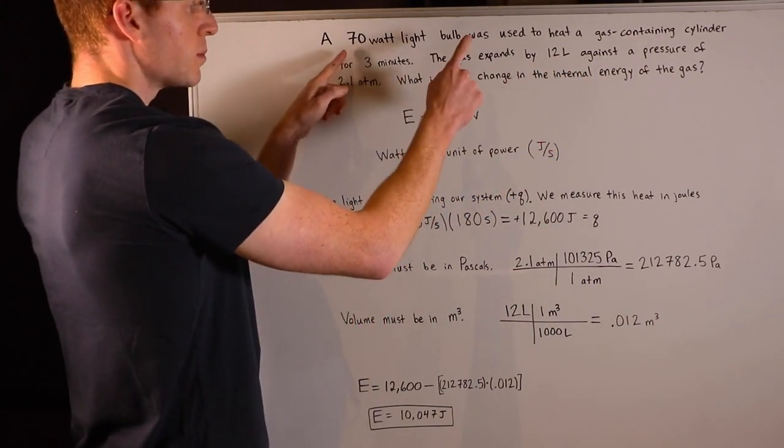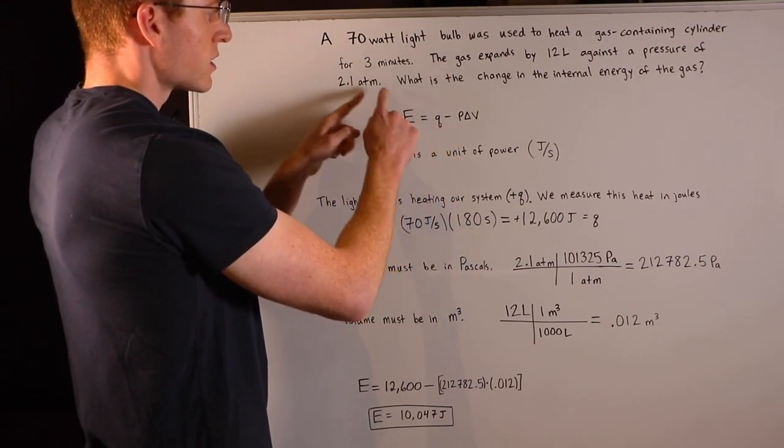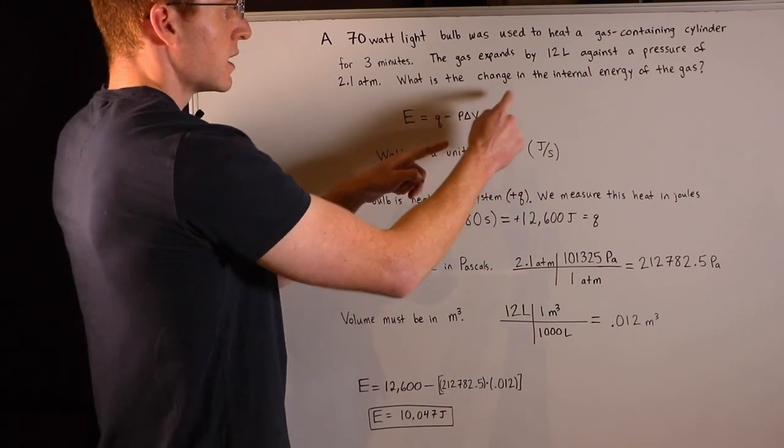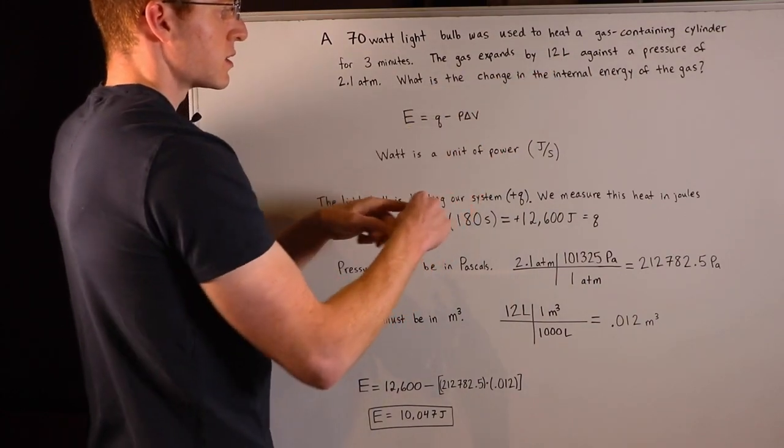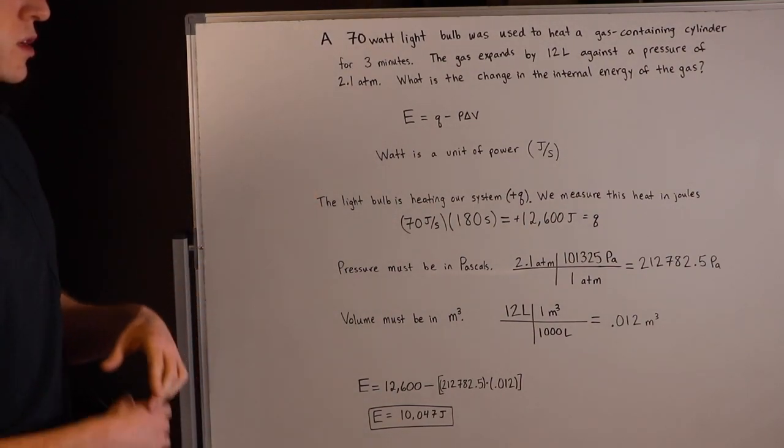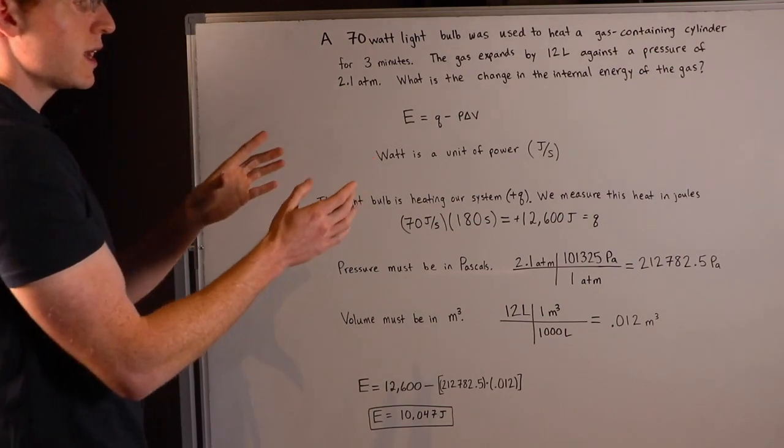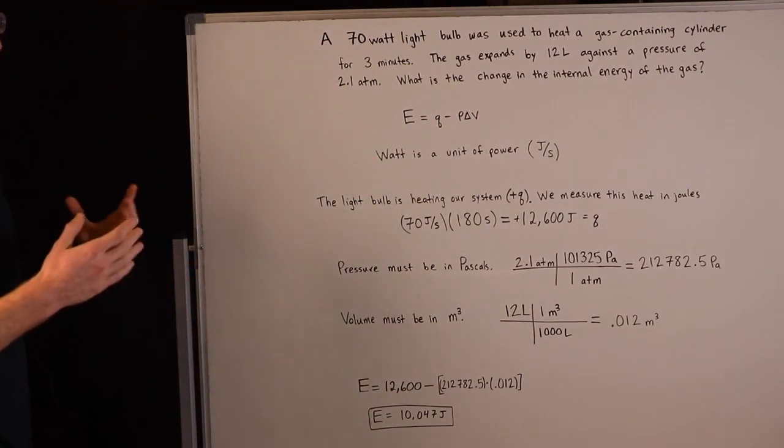They mention a light bulb, and that kind of sounds like we're adding heat into the system, right? So Q, they tell us a pressure, P, and they give us a volume change, delta V. So we really have everything here, and we'll just solve for E. The trick of this problem is to make sure that we interpret the word problem correctly, and change all of our units to the correct units.